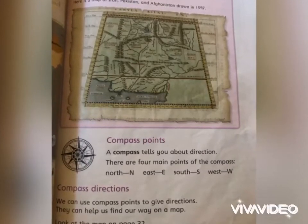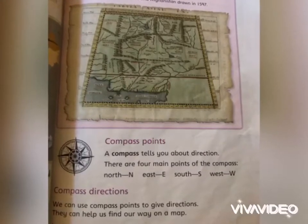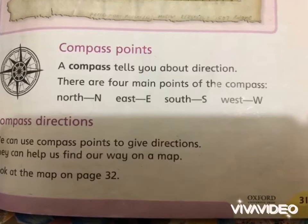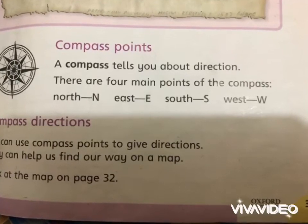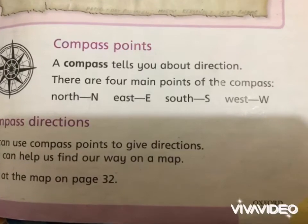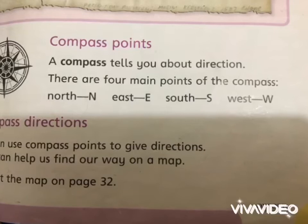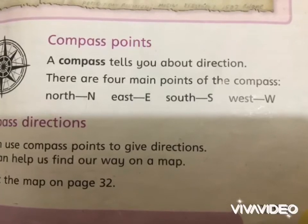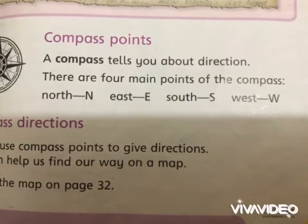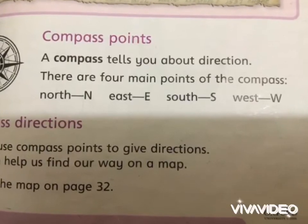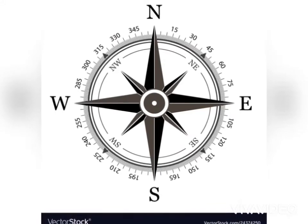After this map, let's talk about compass. The compass tells you about directions. There are four main points of the compass: North, East, South and West. We can use a compass to give directions.